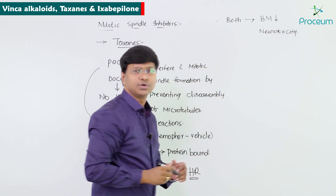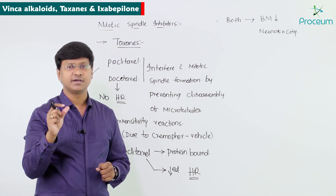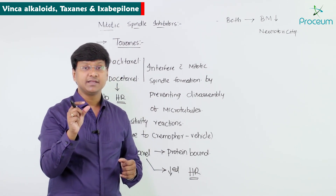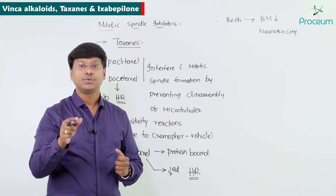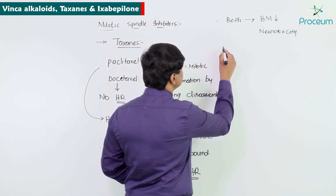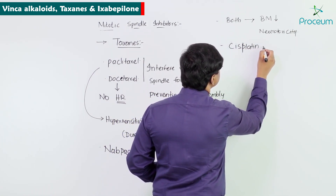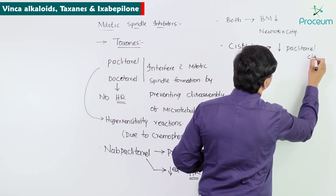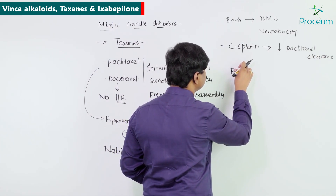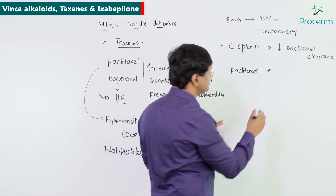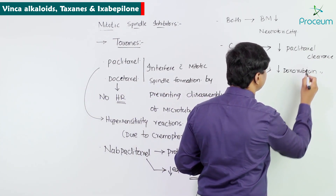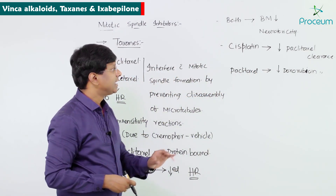Regarding drug interactions of paclitaxel: cisplatin decreases paclitaxel clearance, whereas paclitaxel itself can decrease doxorubicin clearance. These are two very important drug interaction points regarding paclitaxel.